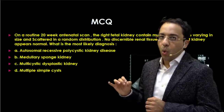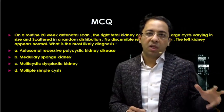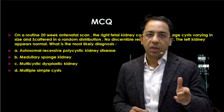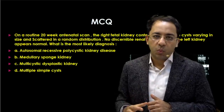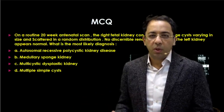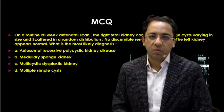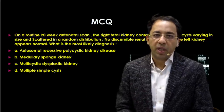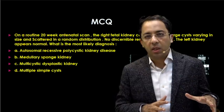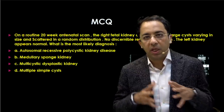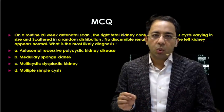In ARPCKD, renal tissue is present alongside the cysts. Regarding multiple simple cysts, we usually talk about that in older people — it's possible to have benign simple cysts in an elderly patient. However, in that case you should still have renal parenchyma. Here, there is no renal parenchyma at all, so multiple simple cysts is ruled out.